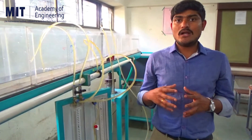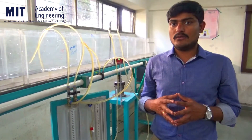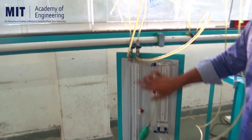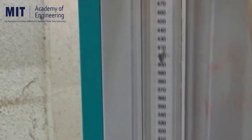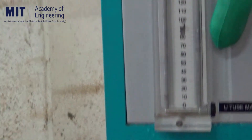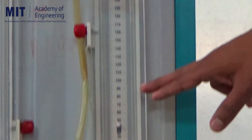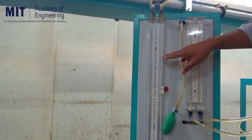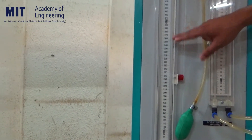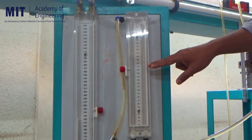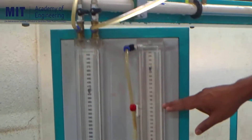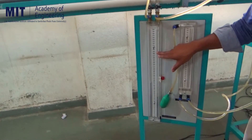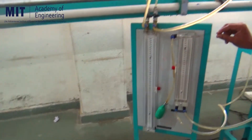The first is the U-tube differential manometer and the second is the inverted U-tube differential manometer. Here we have the U-tube differential manometer and the inverted U-tube differential manometer. First we will look at how to determine the pressure difference using the U-tube differential manometer, then using the inverted U-tube differential manometer.